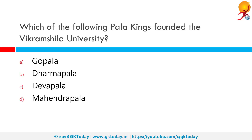Which of the following Pala kings founded the Vikramshila University? The Vikramshila University was set up by the Pala dynasty king Dharmapala in the late 8th or early 9th century in Bhagalpur, Bihar. The ancient Vikramshila University was intended to complement the existing world-class universities at Nalanda and Takshashila. It lasted four centuries before being destroyed during an attack by Bakhtiyar Khilji of the Delhi Sultanate.